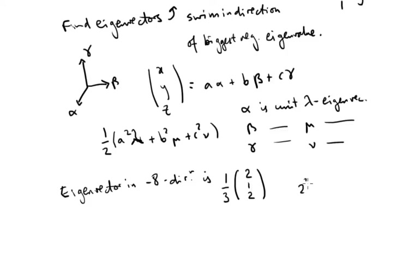Because 2 squared plus 2 squared plus 1 squared is 9, so the square root of this is the length of this vector, which is 3.